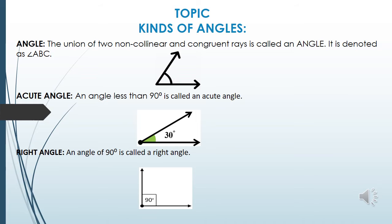Right angle: an angle of 90 degrees is called a right angle. In the figure, 90 degrees - this is a right angle.